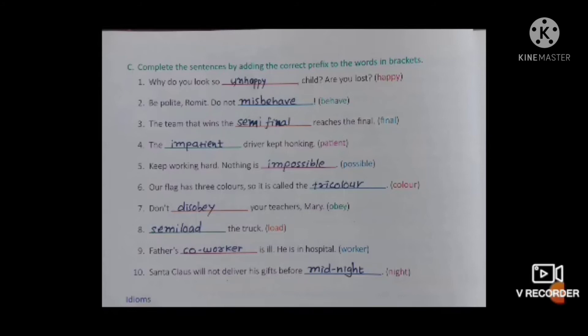Sixth one: 'Our flag has three colors so it is called _____ (color).' We put 'tri' - tricolor. Hamara jo flag hai uske teen color hain, isliye use tricolor kaha jaata hai - teen ranga. Seventh one: 'Don't _____ (obey) your teachers.' We put 'dis' - disobey. Dis means unko sab ko disobey nahin karna hai, means unko obey karna hai.